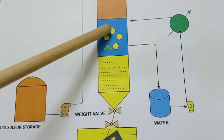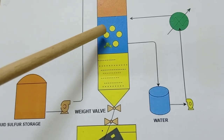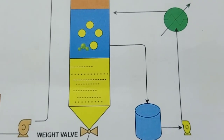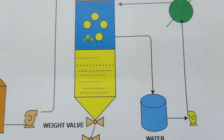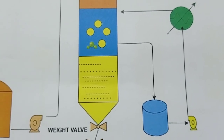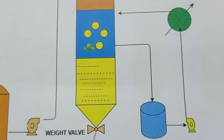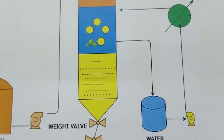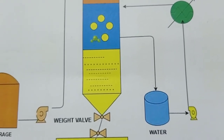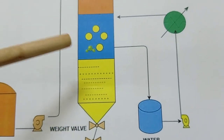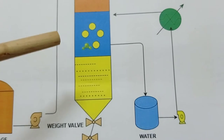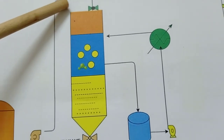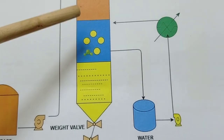The sulfur is sprayed into the water, the temperature reduces, and the cold water solidifies the sulfur into a solid form — the same principle as when you liquify candle wax and pour it into water at room temperature; it solidifies into whatever shape it contacts. The spray nozzle distributes the sulfur uniformly into the water bath.